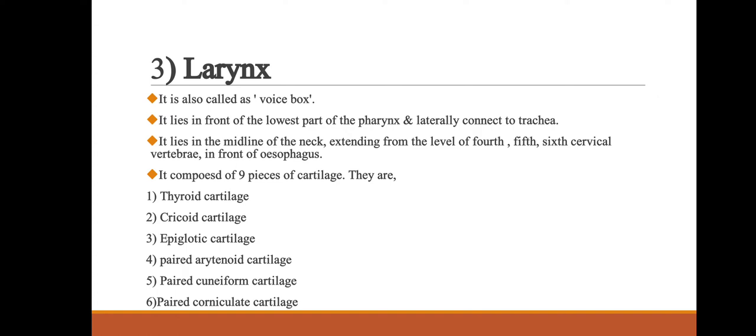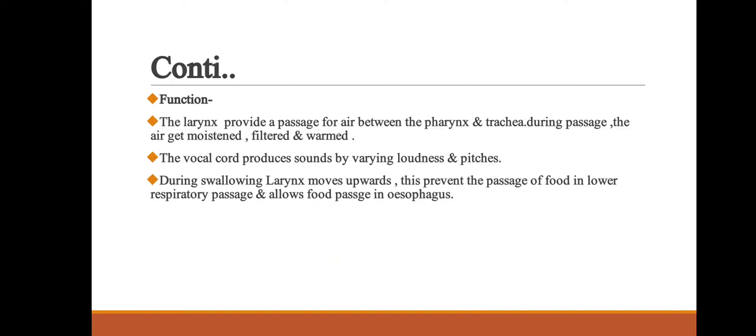The larynx is lined with ciliated columnar epithelial cells, except the vocal cord. The vocal cord lies inside the larynx, passing from the thyroid cartilage in front to the arytenoid cartilage. When air passes through the epiglottis, the cord vibrates and produces sound, or voice. We will now discuss the functions of the larynx.